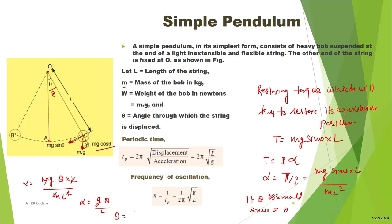From this equation we can say the angular displacement is directly proportional to angular acceleration, so this simple pendulum will perform SHM — simple harmonic motion — where displacement is directly proportional to acceleration. Here L/g is a constant quantity, so theta/alpha = L/g.